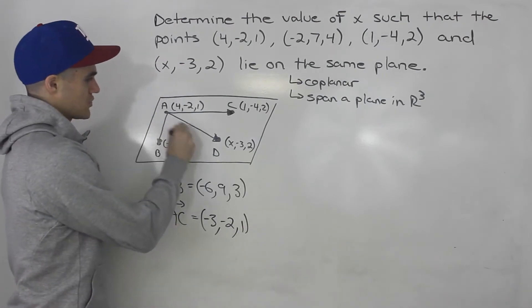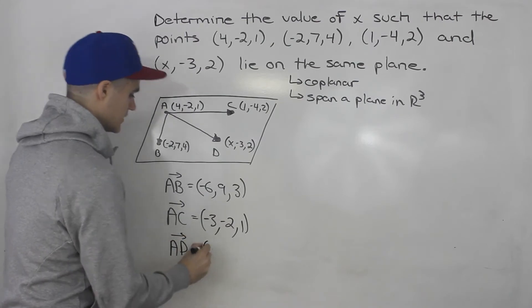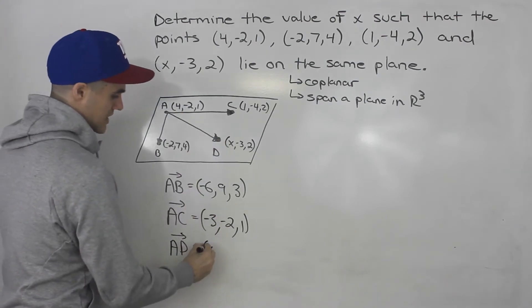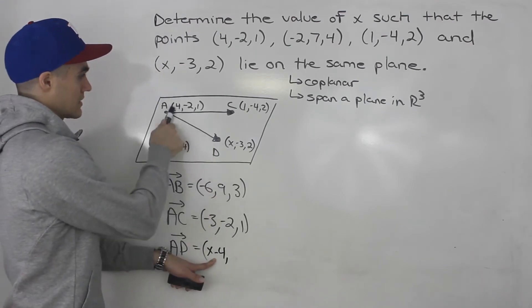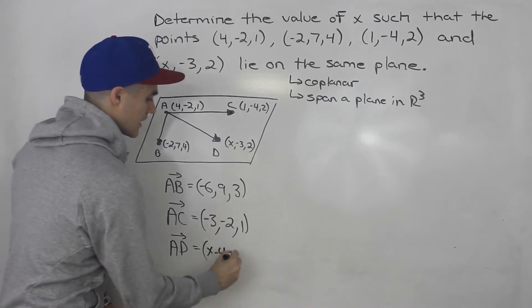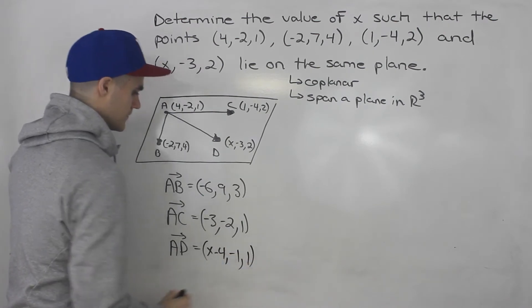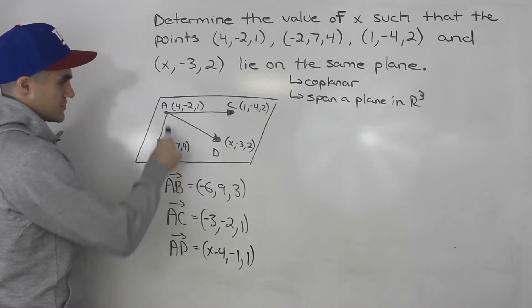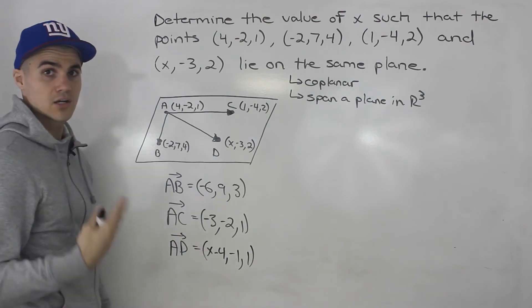Finally, vector AD: take coordinates of D minus coordinates of A. That gives (x−4, −3−(−2), 2−1) = (x−4, −1, 1). Notice here we won't have an actual number for the first component — just the expression x−4. So now we have three vectors — AB, AC, and AD — all in component form.